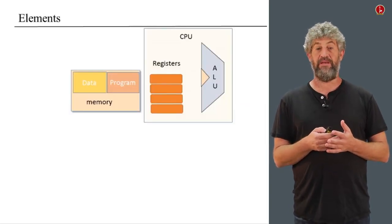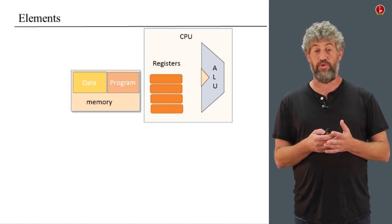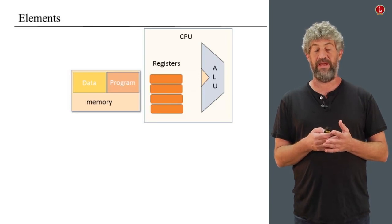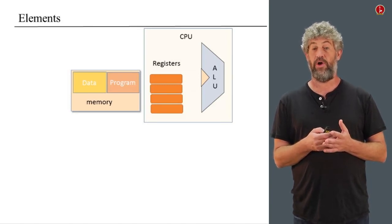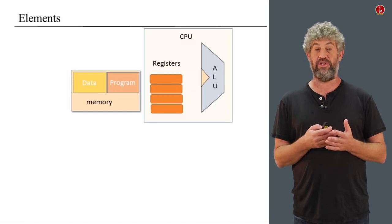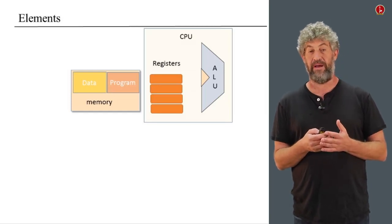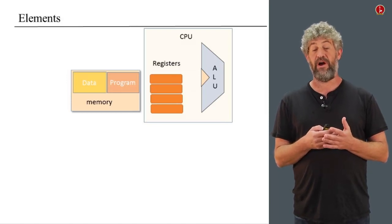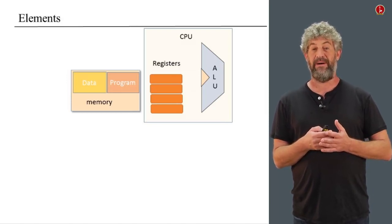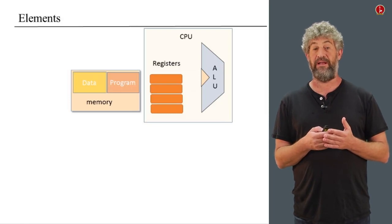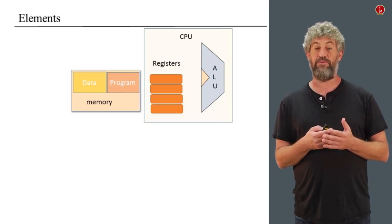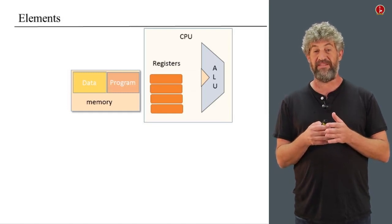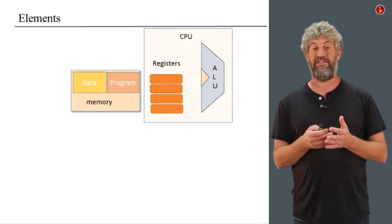Generally speaking, our CPU is going to be composed of two main components. One of them is what you often call the arithmetic logic unit — a piece of hardware that is able to add numbers, subtract numbers, and do logical operations. The second element is a bunch of registers, places where we can store data that we're going to use for the rest of the computation. This is basically the core of the elements that the CPU is built of.